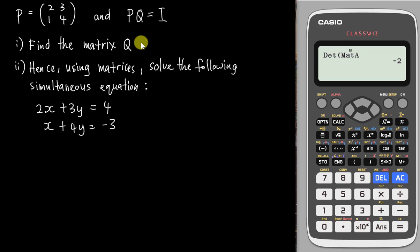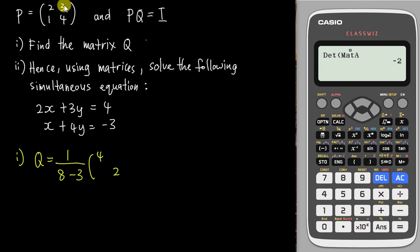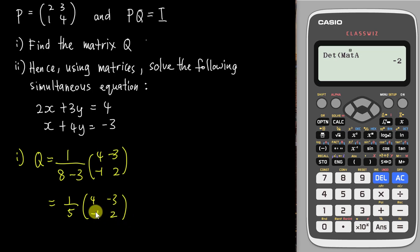Now let's look at a Paper 2 question. The question says: P equals [2 3; 1 4] and PQ equals I. Find matrix Q. As discussed, Q is simply P inverse. To find P inverse manually: 1 over (AD minus BC), where AD is 2×4=8 and BC is 1×3=3, so the determinant is 8 minus 3 = 5. Swap A and D to get 4 and 2, and make B and C negative: negative 3 and negative 1.